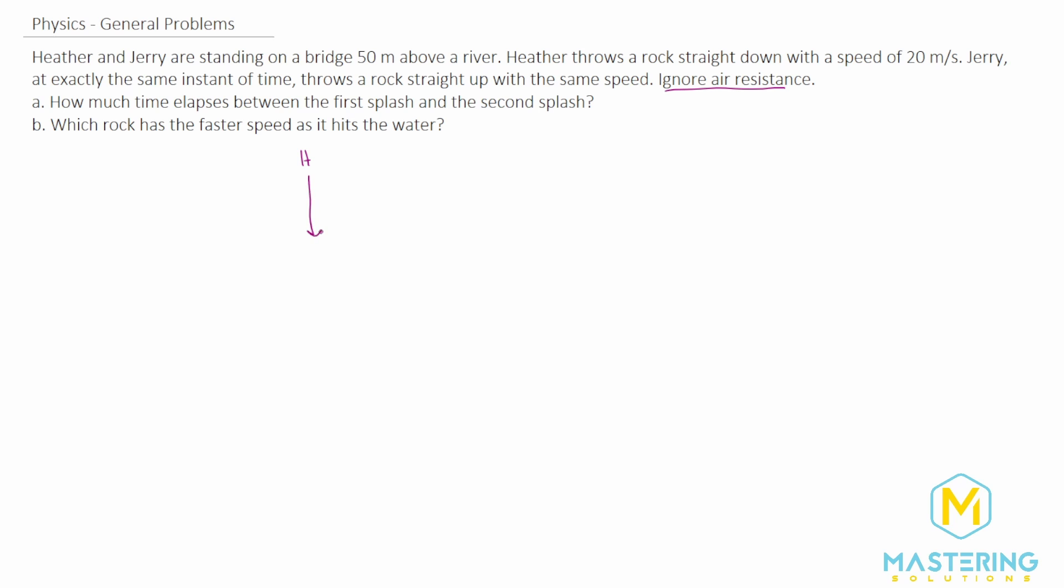So Heather is throwing it straight down, and her initial velocity is a negative 20 meters per second. The delta y will be the same for both, which is negative 50 meters. Acceleration is also going to be the same for both, which is negative g. The time, we're not sure what it is for Heather, and we don't know what her final velocity is going to be.